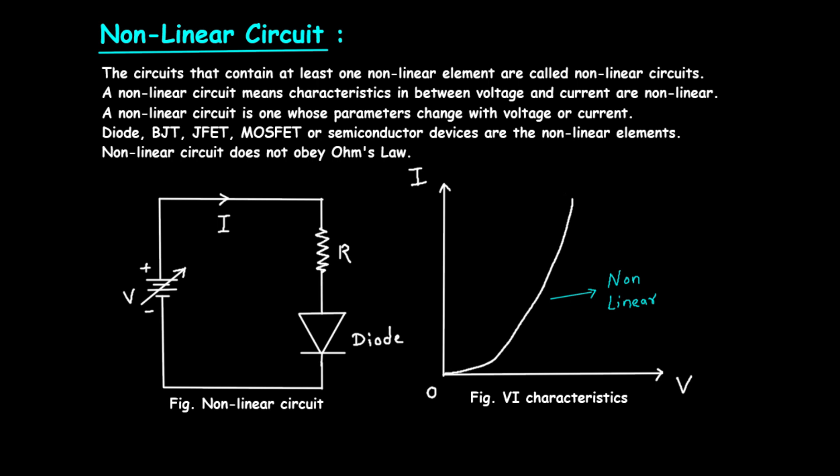At low voltages, the current is almost zero because the diode is not conducting. This is the flat part of the curve near the origin. As the voltage increases and surpasses the threshold, the current starts to increase rapidly. This part of the curve is steep, showing a sharp rise in current with a small increase in voltage. This non-linear relationship between voltage and current is what defines the behavior of non-linear circuits.